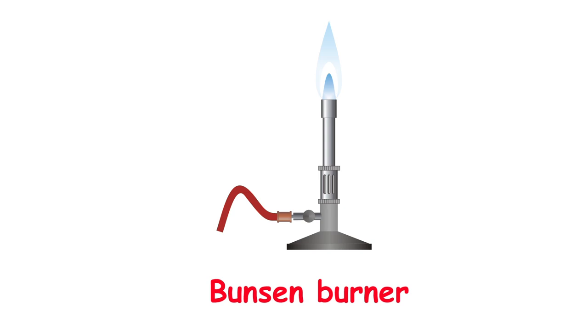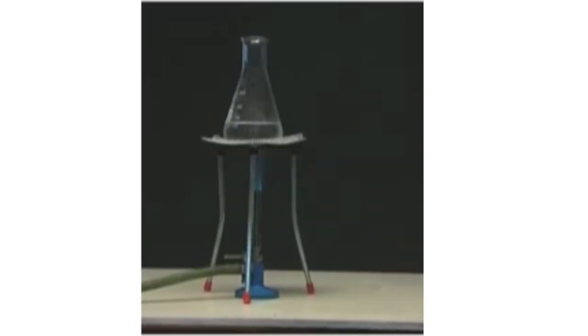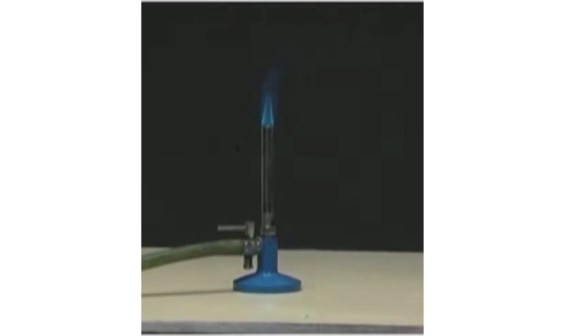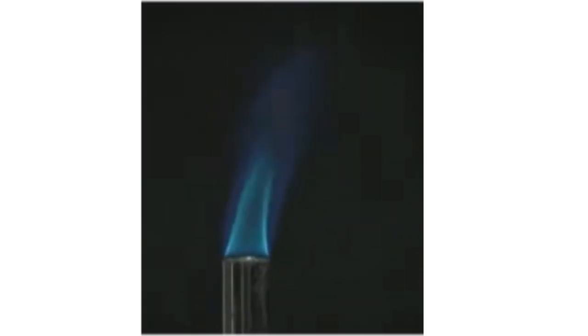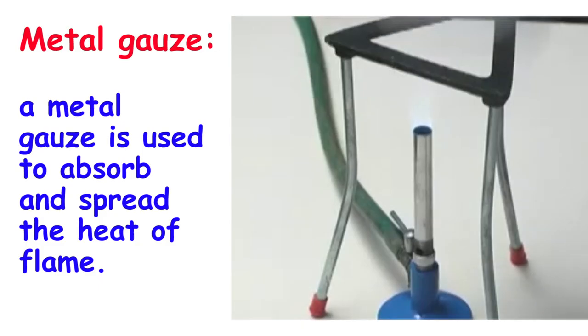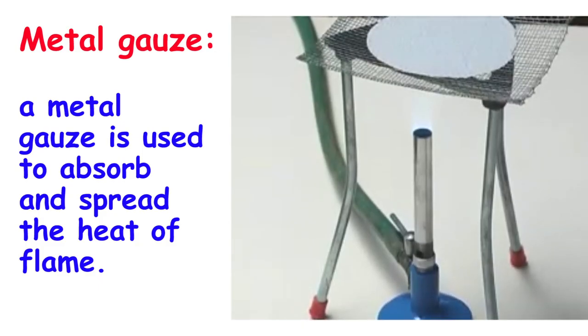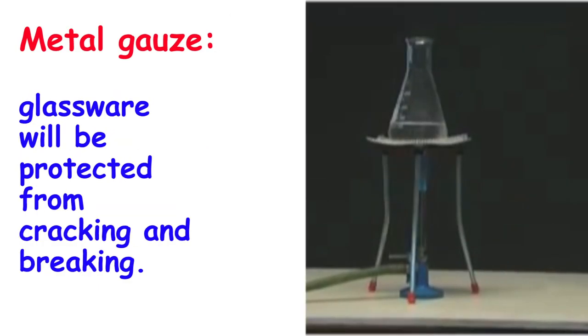Sometimes we need to heat the mixture, so we use a benzene burner. The benzene burner will produce flame. That's why we use a metal gauge to absorb and spread the heat of flame. Accordingly, glassware will be protected from cracking and breaking.